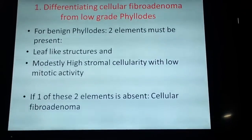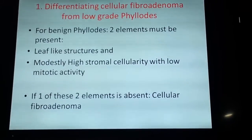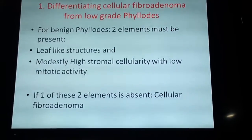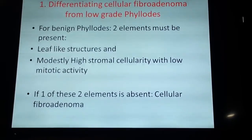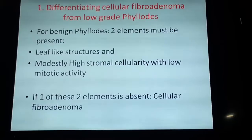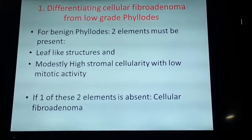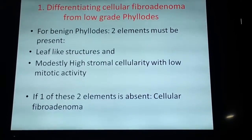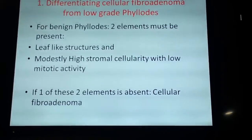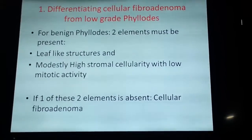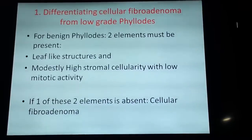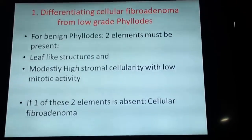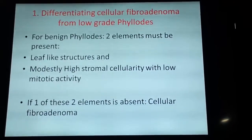If there are no leaf-like structures, although there is high cellulite, it's a fibromyalinoma. If there are leaf-like structures and no high cellulite, it's a cellular fibromyalinoma.